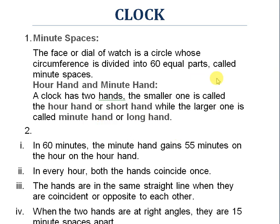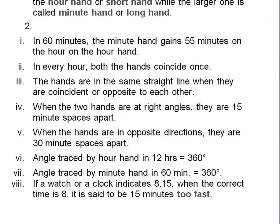In 60 minutes, the minute hand gains 55 minutes on the hour hand. In every hour, both the hands coincide — both hands come together, for example at 12. The hands are in the same straight line when they are coincident or opposite to each other.